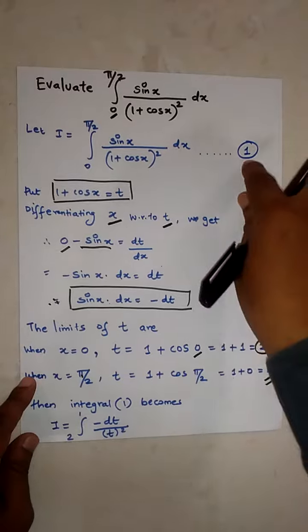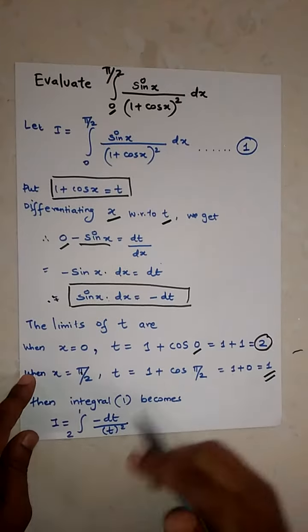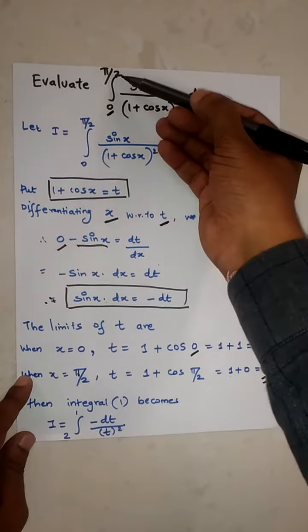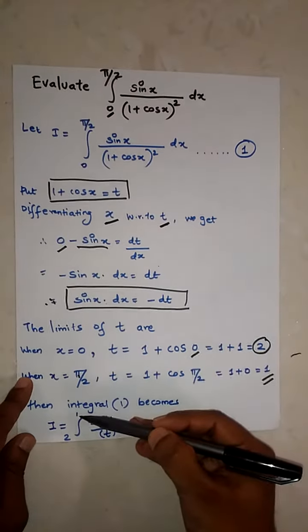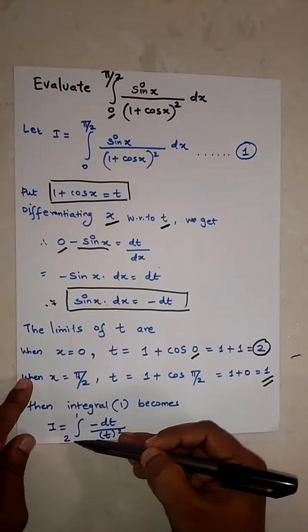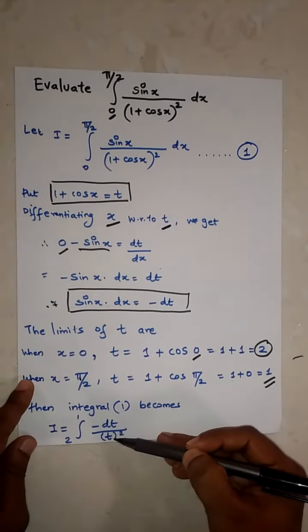Therefore, the integral becomes: I equals the integral from 2 to 1 of negative dt over t².